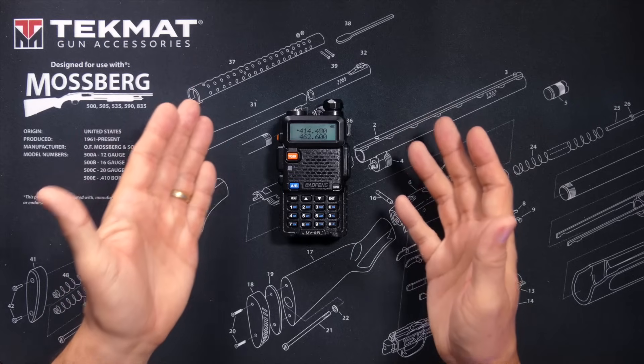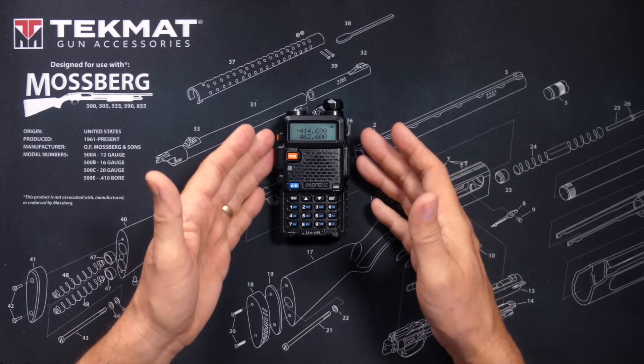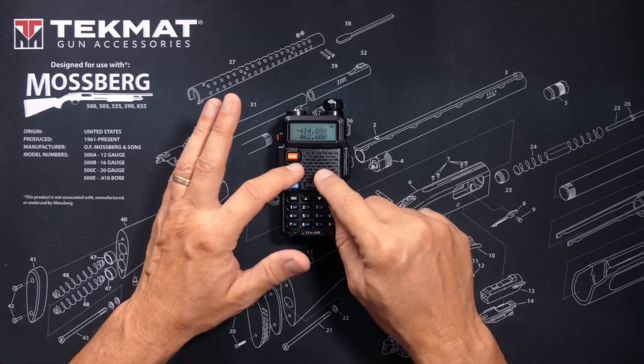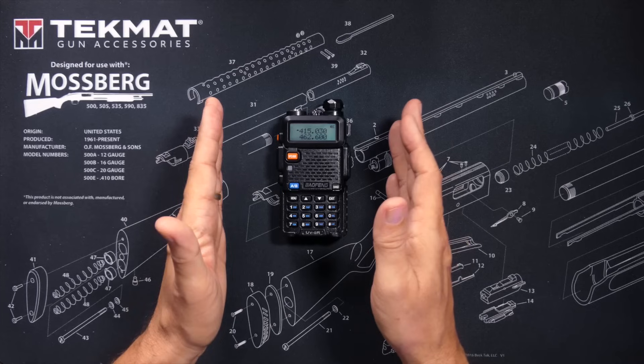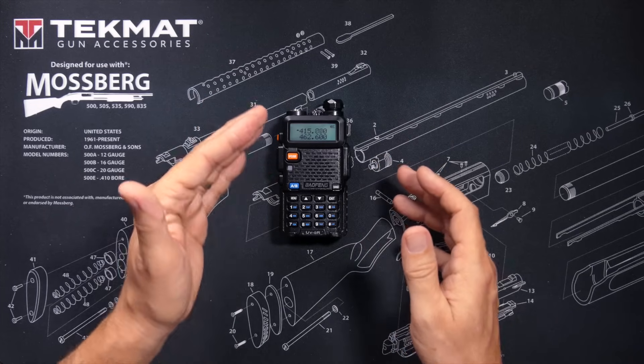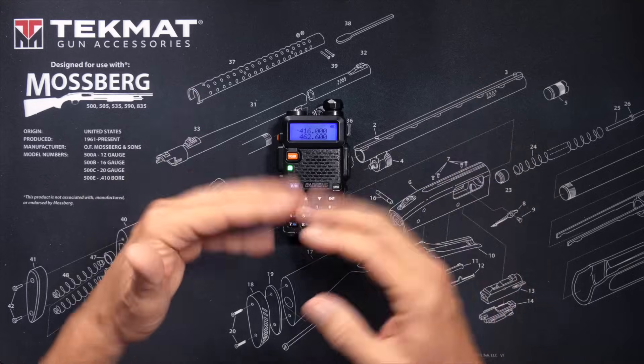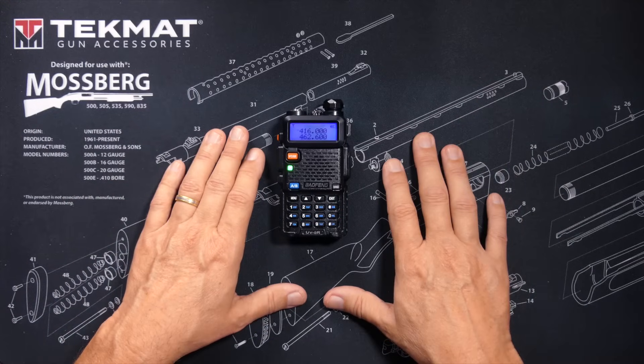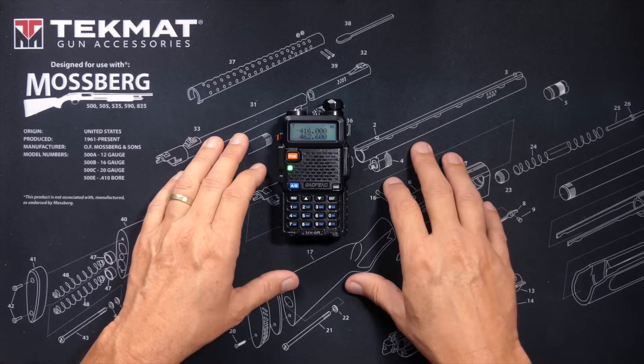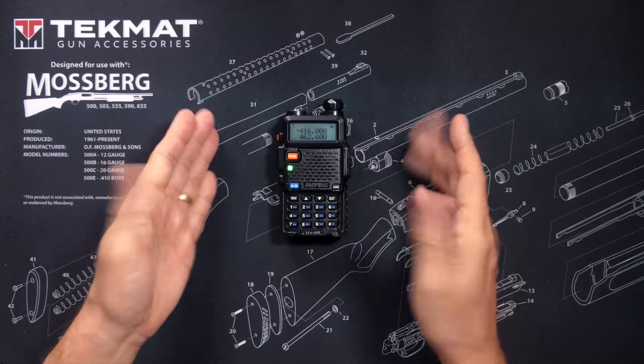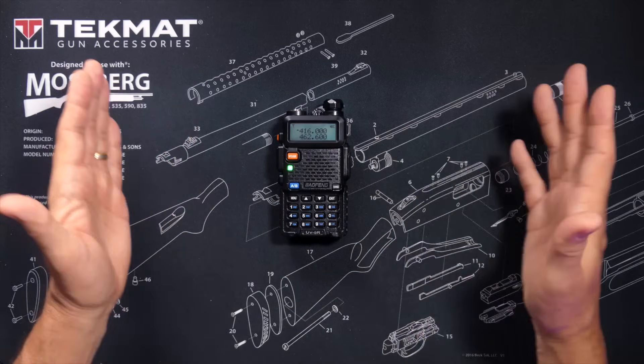And the biggest question that everybody wants to know about scanning through frequencies is, can you set the Baofeng UV5R to scan through just a small range of frequencies? For example, can you set it to scan between just 460 and 470 megahertz instead of the entire range? And the answer to this question is very easy. The answer is no. The Baofeng UV5R cannot scan through a specified range of frequencies. It's all or nothing.